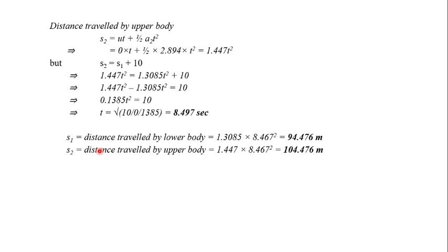S2 is the distance traveled by upper body. Substituting t value in s2 equation, s2 will be 1.447 t squared, so we will get 104.476 meters. Therefore, the distance traveled by the lower body will be 94.476 meters, and distance traveled by the upper body will be 104.476 meters.